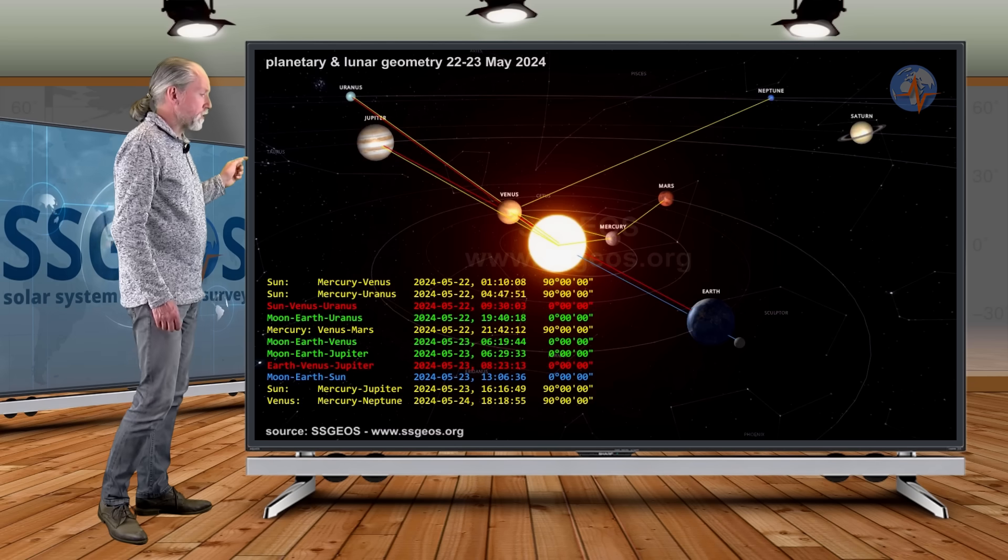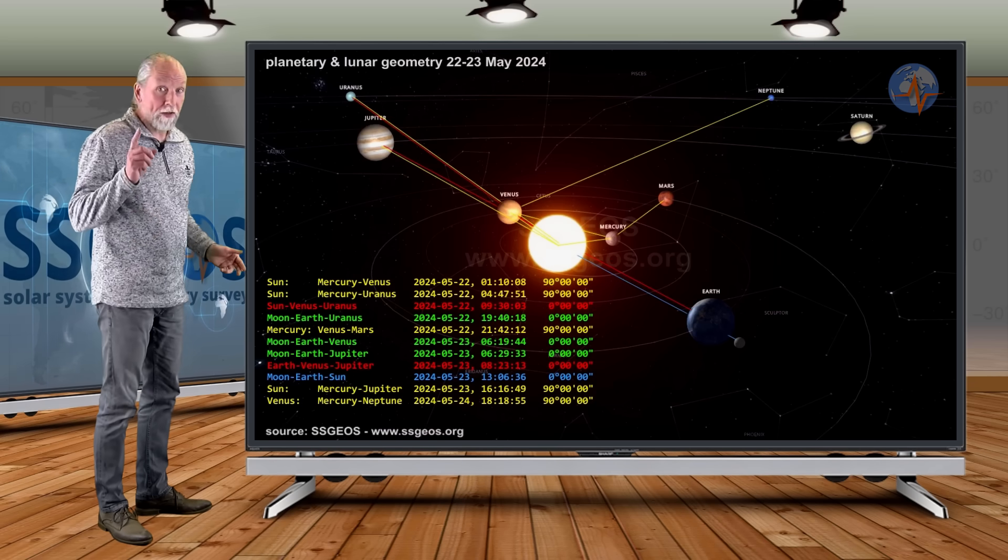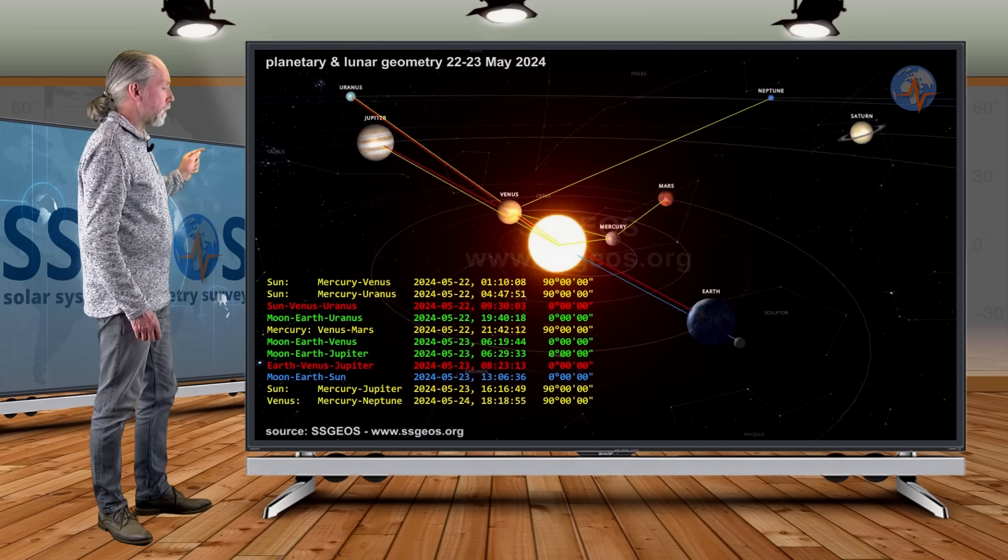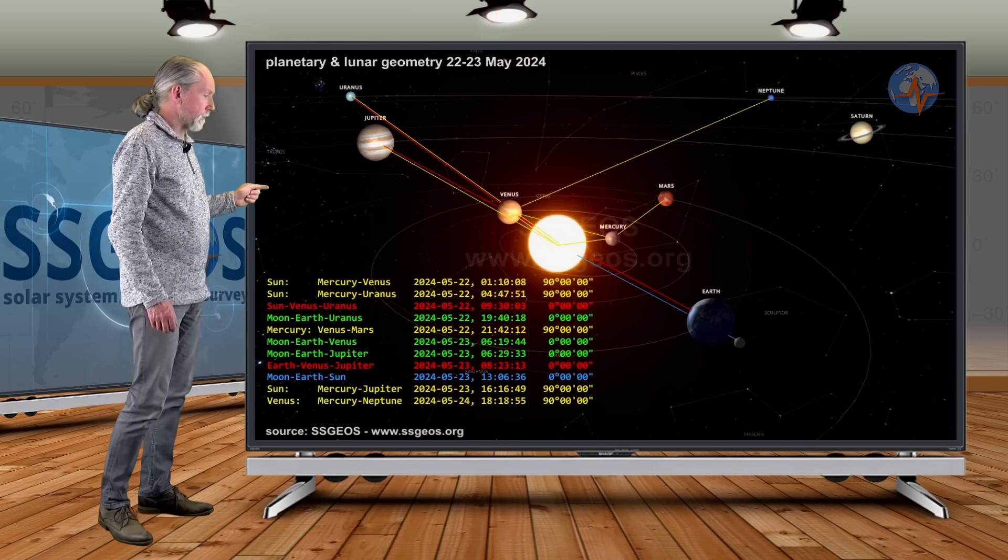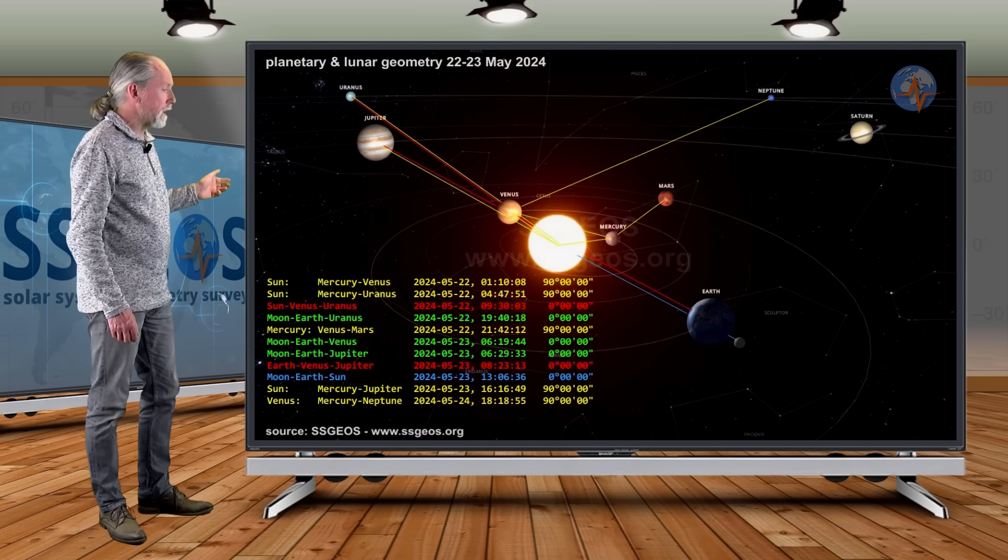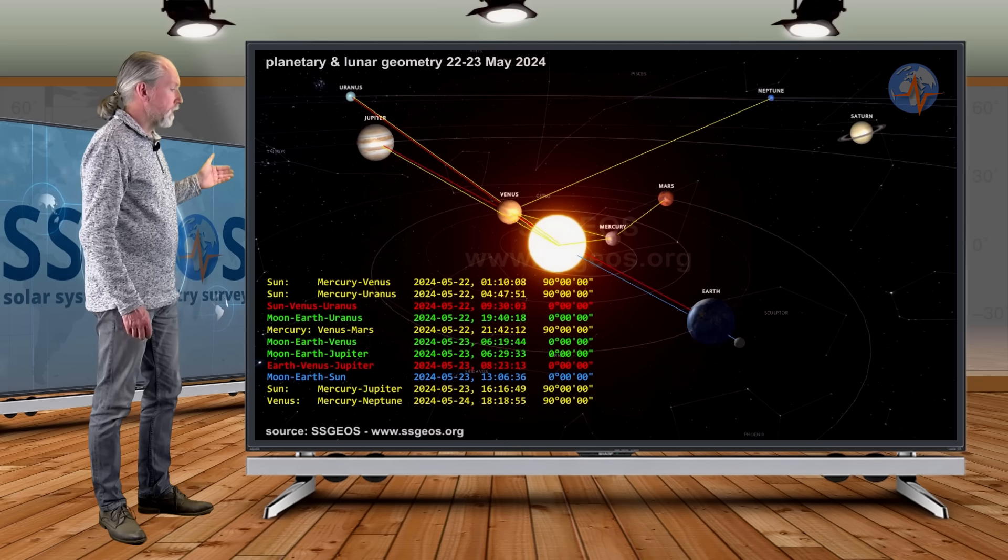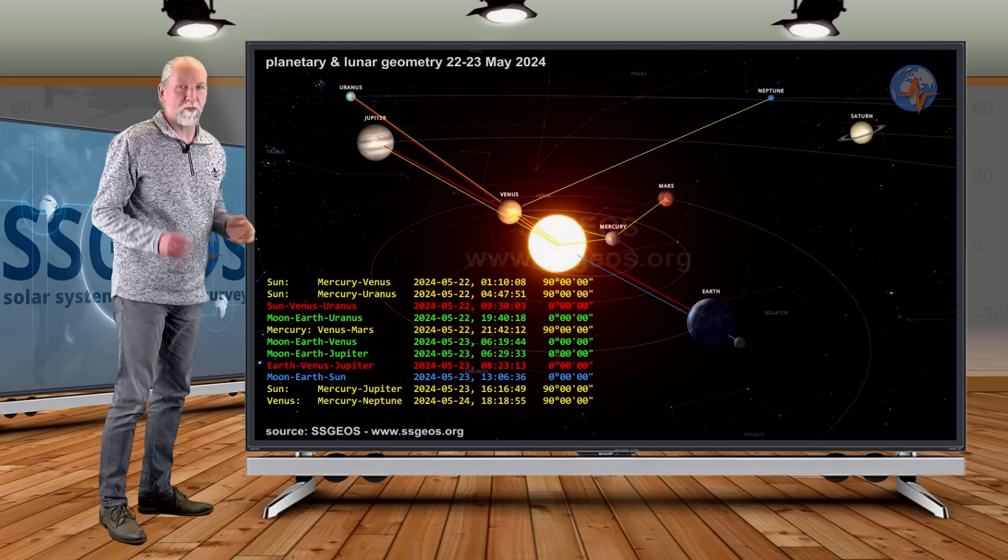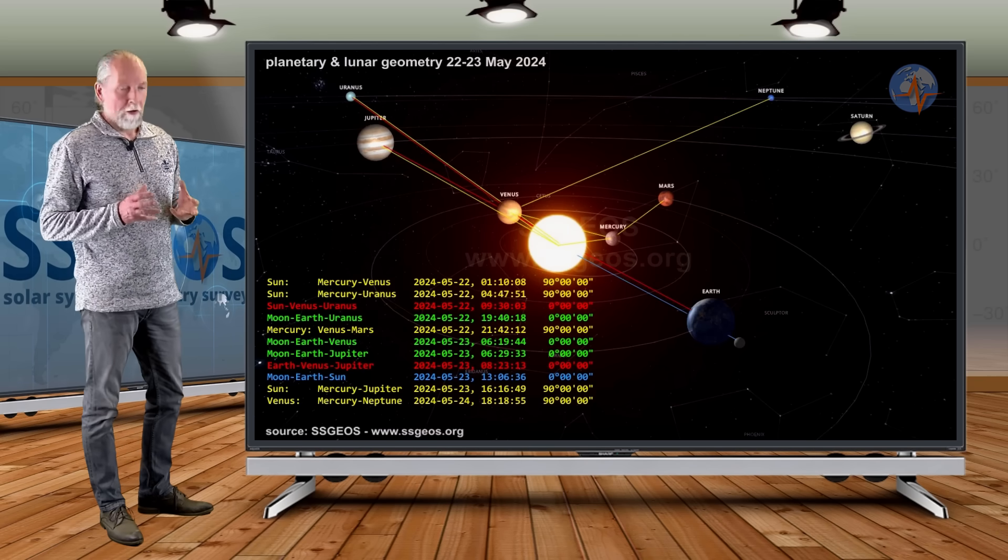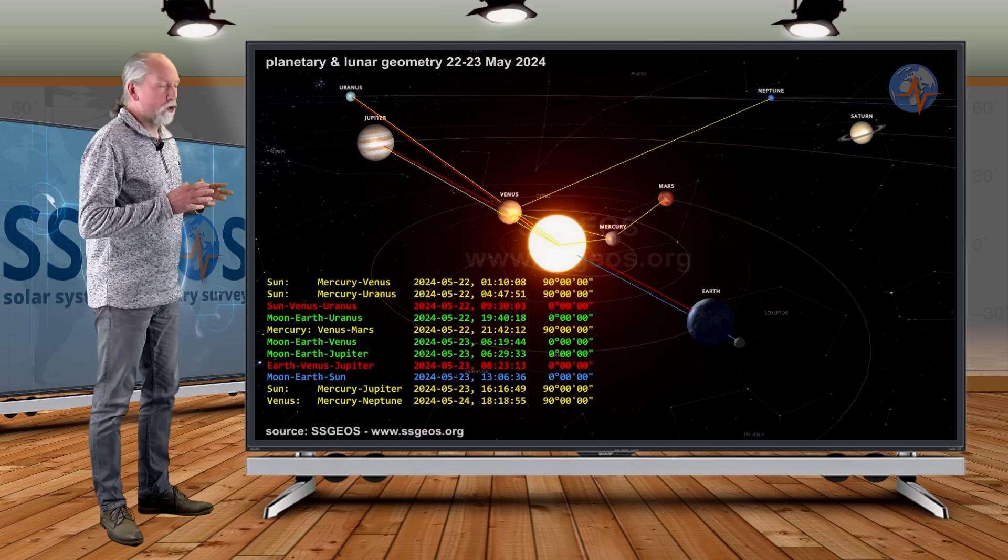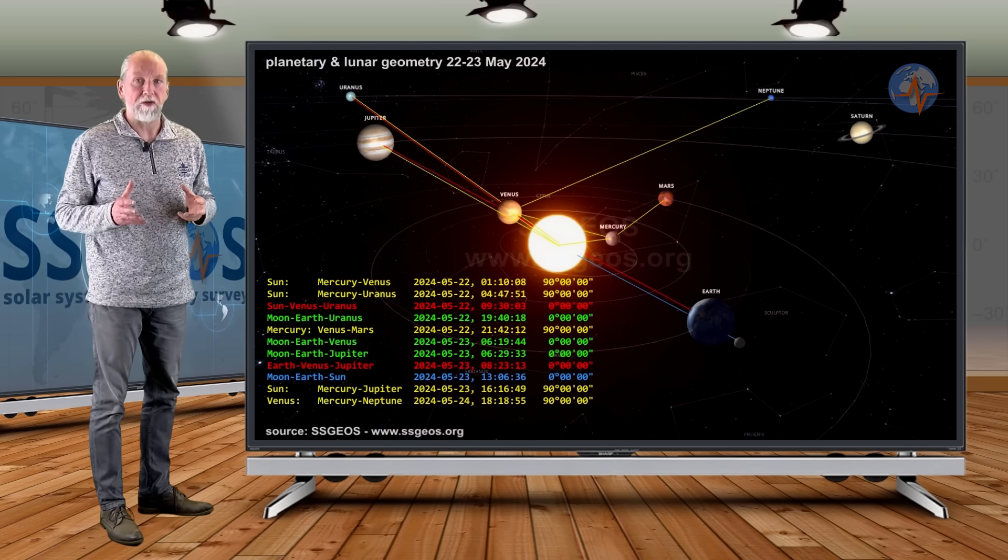Two planetary conjunctions, Sun-Venus-Uranus, critical conjunction and also Earth-Venus and Jupiter. And then also we see these green lines, Moon-Earth-Uranus, Moon-Earth-Venus and Moon-Earth-Jupiter just before the full moon. And this convergence can result in some big seismic activity, potentially reaching higher 7, maybe even 8 magnitude.